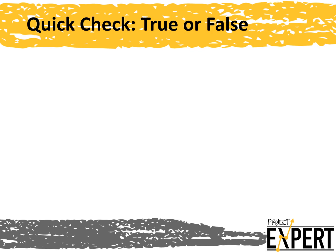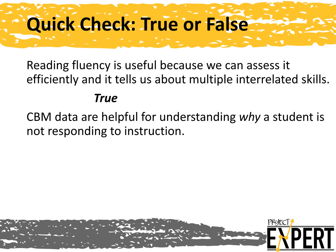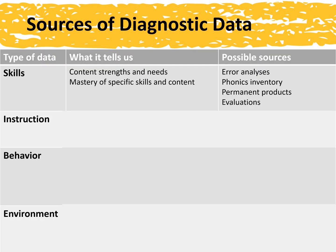Let's do a quick check with true or false. Reading fluency is useful because we can assess it efficiently and it tells us about multiple interrelated skills. This is true. The key idea for this module is that reading fluency indicates multiple skills, but we bring in other data to better understand specific skills. CBM data are helpful for understanding why a student is not responding to instruction. This is false. CBM data are helpful in knowing when a student is responding to instruction, but we need more information to make an informed theory as to why. Recall that four possible areas of diagnostic information are skills, instructional, behavioral, and environmental.